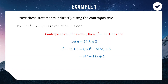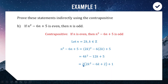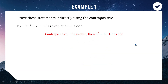We are trying to show this is an odd number — two times something plus one. We split the five into four plus one, and the four factors out a two, giving us two times (2k² − 6k + 2) + 1. So we have two times something plus one, which is an odd number. Therefore the contrapositive statement has been shown to be true, and therefore our original statement must also be true.